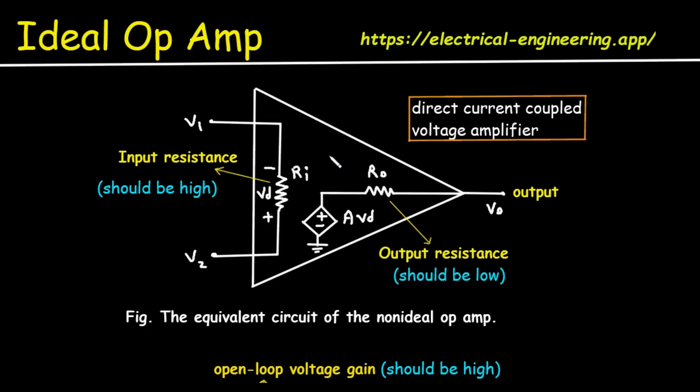Now, to understand how to use them, we first need to look at what's inside, both in the real world and in its idealized form which makes our lives as engineers and hobbyists much easier. First, the non-ideal real world Op Amp model. Here we can see the diagram for the equivalent circuit of the non-ideal Op Amp. Let's start by looking at this diagram which represents a real world Op Amp. This is a simplified model of the complex circuitry inside an actual Op Amp chip. It helps us understand its practical limitations.